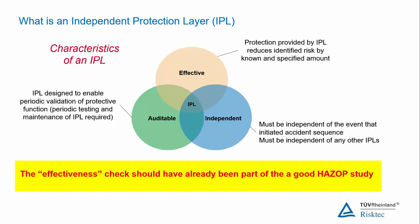An IPL should be effective — it's got to prevent or mitigate the hazard. It must be auditable — it's got to be testable. And it must be independent. If it meets those three criteria it is an IPL and we can recognize it as a reliable safeguard that we know will reduce the likelihood of a hazard.